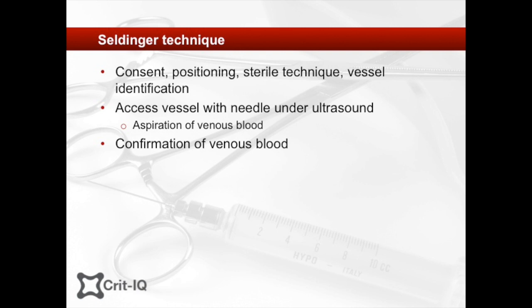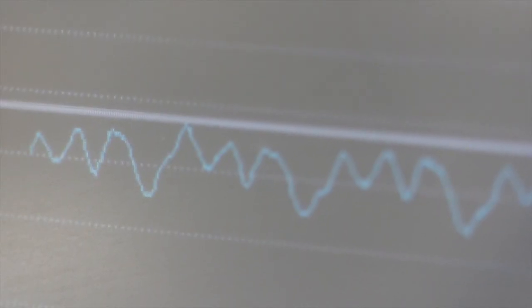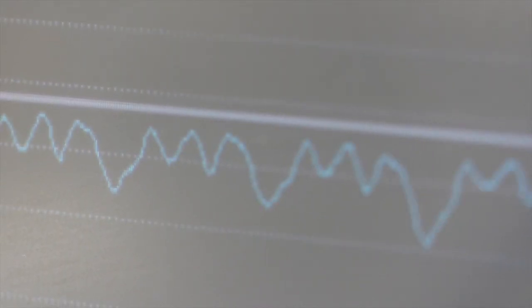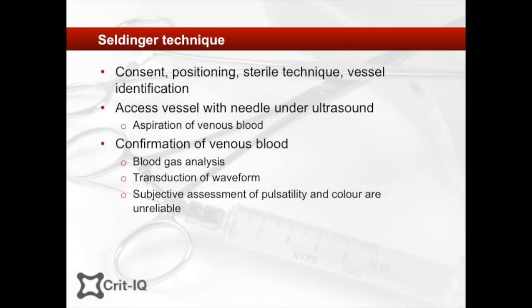Step 2. Confirming the blood is venous is not always straightforward. If in doubt, obtaining a blood gas from the sample or transducing the waveform should allow the operator to distinguish venous from arterial flow. Remember, subjective estimates of pulsatility on removal of the syringe may be misleading. Veins can be pulsatile in congested states or in tricuspid regurgitation, and arteries less so in low output states. Similarly, for colour, venous blood can be bright if the patient is hyperoxic or the blood is diluted, and arterial blood can look dark in deoxygenated states.